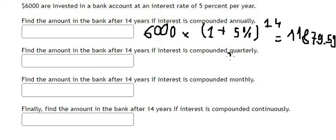Question number 2, this is about quarterly compounding. So we have 6,000 multiplied by 1 plus 5%. But now this is quarterly, that's every 3 months.